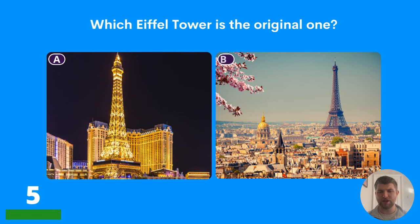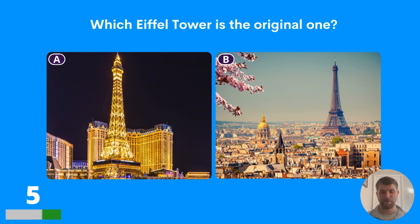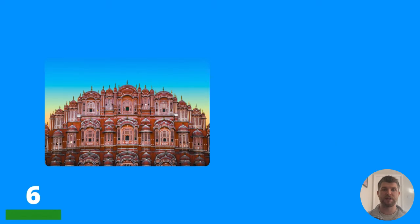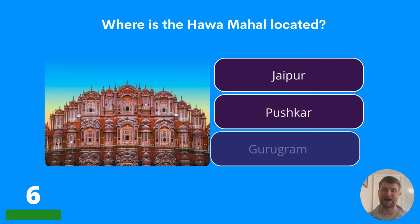Question five: which Eiffel Tower is the original one? Is it the one pictured in A or in B? The answer is B. You can see the tops of the roofs of the buildings in Paris there.